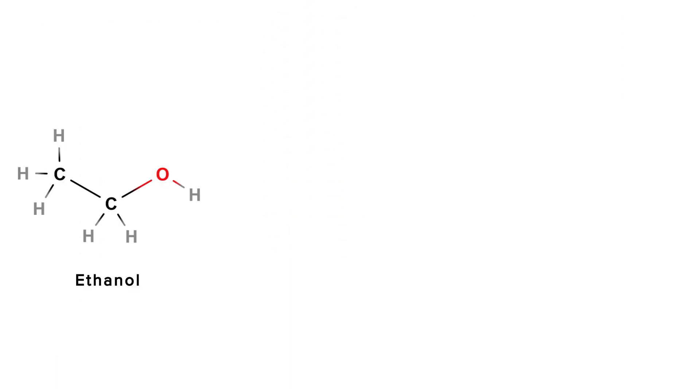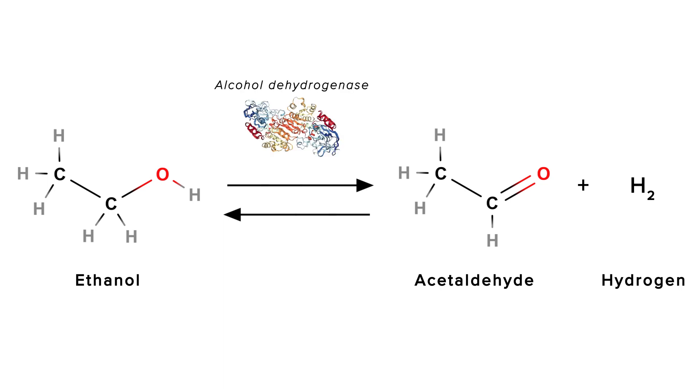So ethanol can be converted into acetaldehyde, but acetaldehyde can also be converted into ethanol. Then what happens when we put here an enzyme that makes this reaction go faster? Which way is it going to go? Are we going to get more of this or more of that?